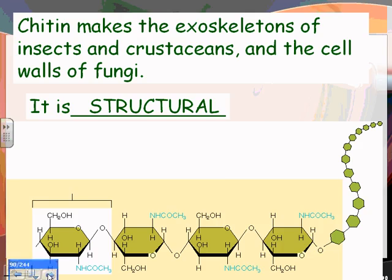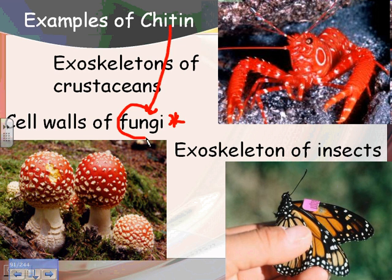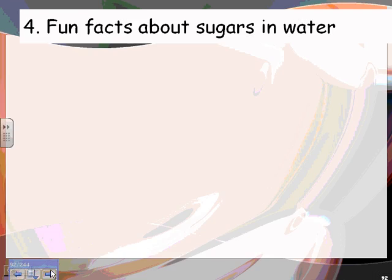Chitin is structural — not used for energy — it's used to build bodies. Here's a crab, where it's found in the exoskeleton; here's an insect, also in the exoskeleton. Importantly, chitin is found in the cell walls of fungi. Among eukaryotes — animals, plants, fungi, and protists — a cell wall made of chitin is a defining characteristic of fungi, just as a cell wall of cellulose is a defining characteristic of plants.